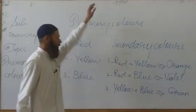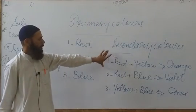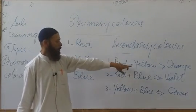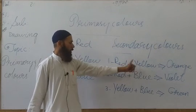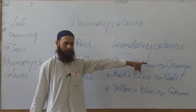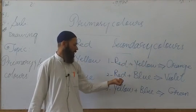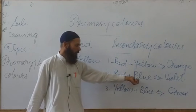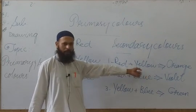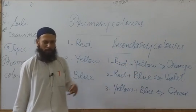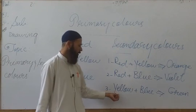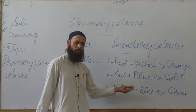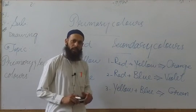Students, these colors are called secondary colors. The secondary colors are: orange, made from red and yellow; purple, made from red and blue; and green, made from yellow and blue.